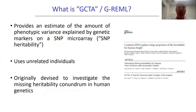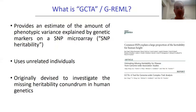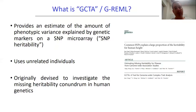So what is GREML? GREML is genetic restricted maximum likelihood. That statistical method basically provides us with an estimate of the amount of phenotypic variance explained by genetic markers on a SNP microarray. This quantity, when expressed as a proportion of the total phenotypic variance, is known as the SNP heritability — the proportion of phenotypic variance explained by genetic markers on a SNP microarray, i.e., how much genetic variance those markers tag.